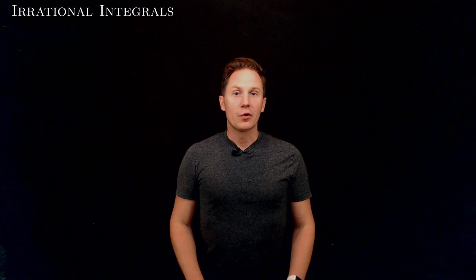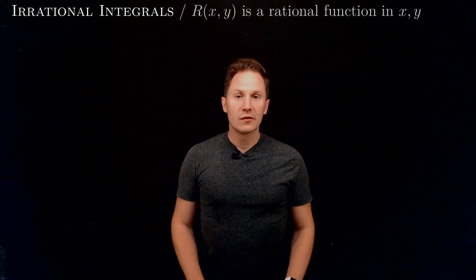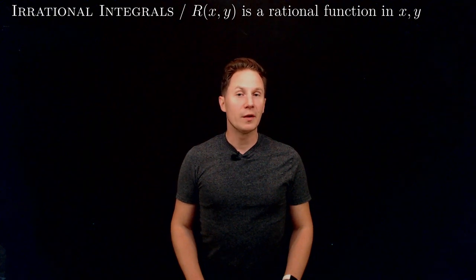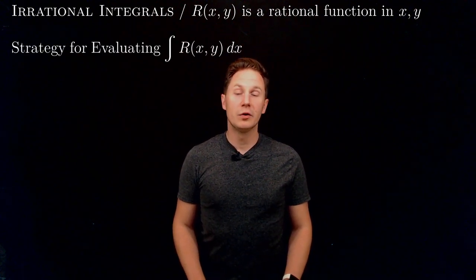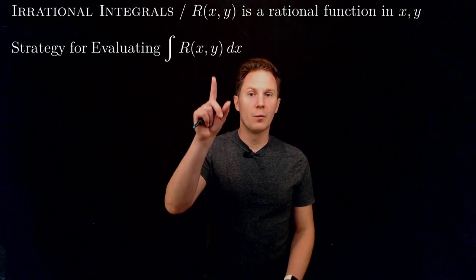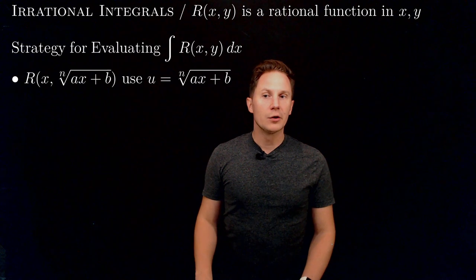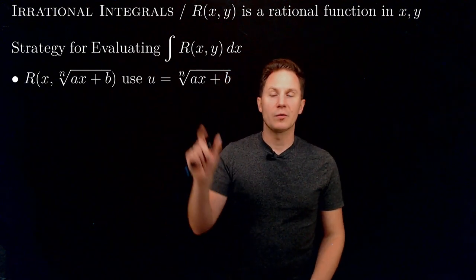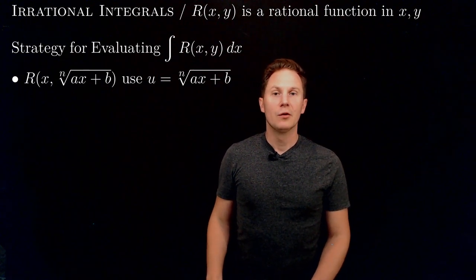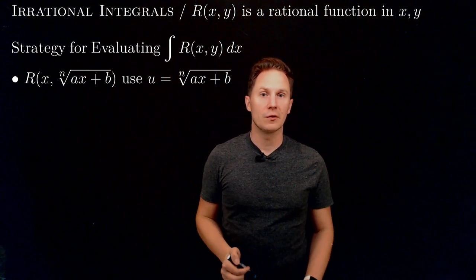Irrational integrals involve the square roots or nth roots of rational expressions, and some of these we can evaluate. Let's consider a rational function r in the variables x and y — a quotient of two polynomials — and the integral of r(x, y) with respect to x. If y is the nth root of ax + b, the u-substitution u = ⁿ√(ax + b) turns the irrational integral into a rational integral that we know how to evaluate.